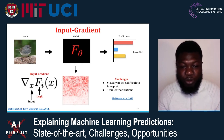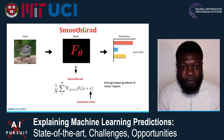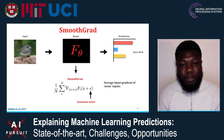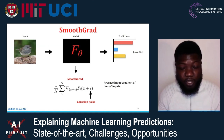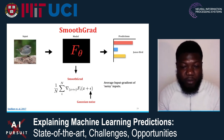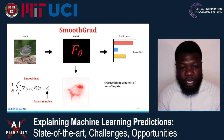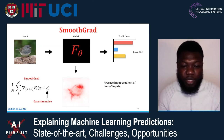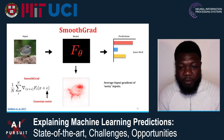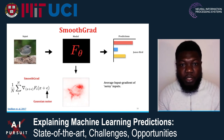Several methods have been proposed to counteract this. One of them is SmoothGrad, a simple modification of the gradient. You take an input you want to explain, create N copies of it, add Gaussian noise to each copy, compute the input gradient for all N copies, and average them — that's what SmoothGrad does. The SmoothGrad visualization shows a saliency map that is more coherent than the raw input gradient saliency map.